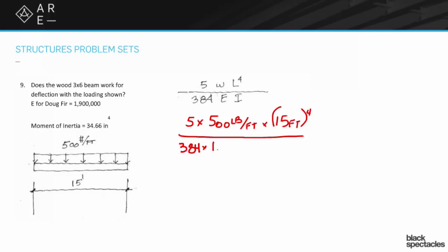And the 1,900,000—what wasn't told is that's actually in psi, so that's pounds per square inch. Then we were given I, which is the 34.66 inches to the fourth. This formula is notorious for having units issues.